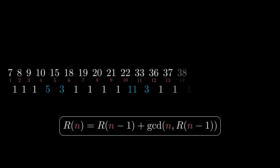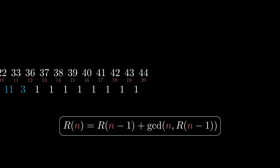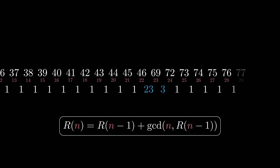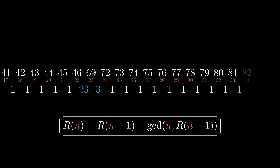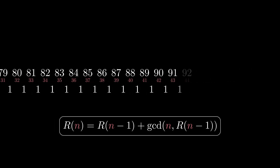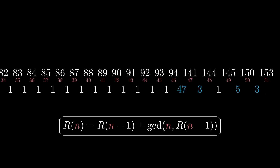As we compute more numbers, we find that the primes aren't very common in the sequence of GCDs, and there are long runs of 1s where no primes appear at all. But there seems to be a shortcut that lets us skip over all the 1s and jump directly from one prime to the next.